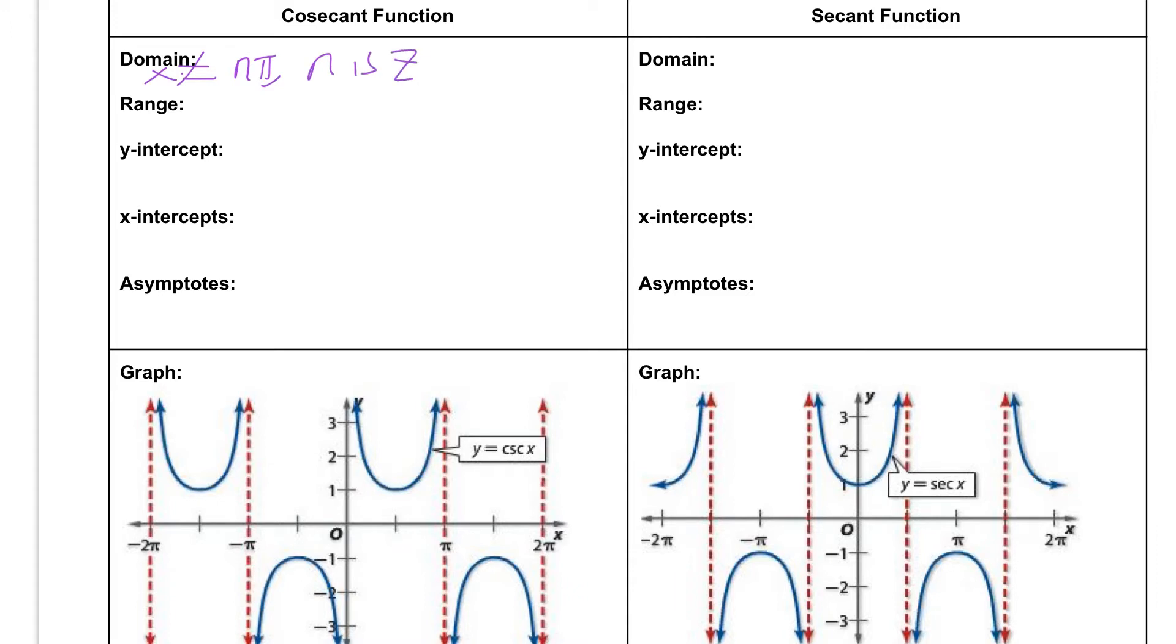And our range, so now we're looking at our y values. If you take a look here at one, this is where our lowest points are up on the top, and negative one is kind of our highest point when we look towards the bottom. There's nothing happening in between negative one and positive one. So we could say that our range goes from negative infinity to negative one in a bracket, meaning it's including the negative one, and it's going from one, again the bracket indicates we're including the one, to positive infinity.